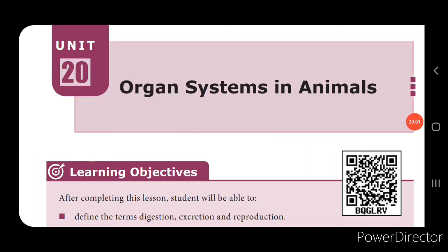Good morning students, welcome to the science session for class 9. Today we are going to see Unit 20: Organ Systems in Animals. We will be learning about the human digestive system, excretory system, and reproductive system — the various parts of the alimentary canal, the process of digestion, the role of enzymes, the organs involved in the excretory and reproductive systems, the role of skin in excretion, and the functions of the male and female human reproductive system.